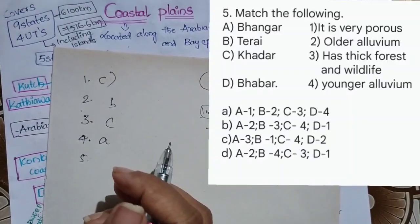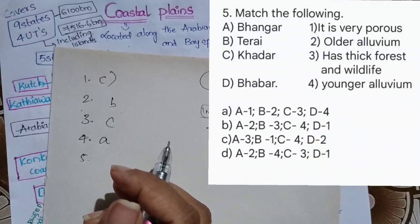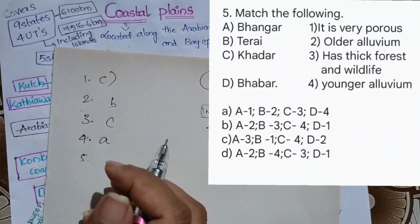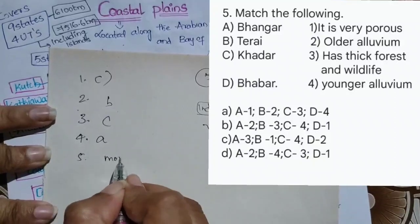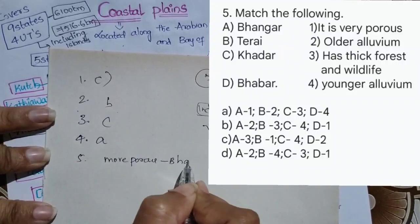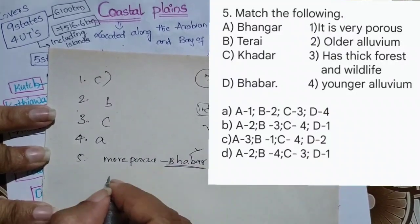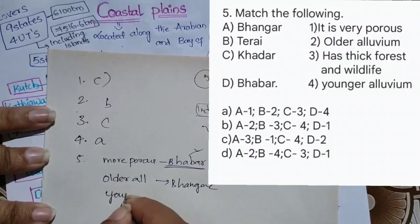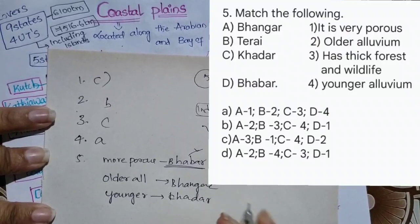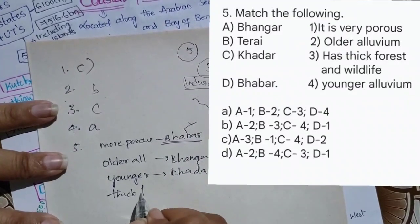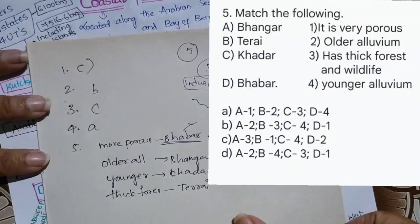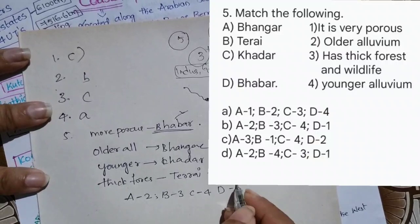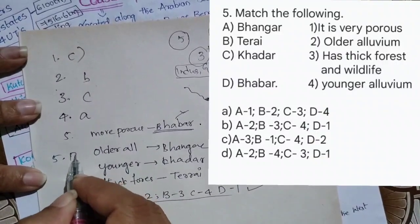Next question: match the following — Bangar, Terai, Khadar, Bhabar — with: very porous, old alluvium, has thick forest and wildlife, young alluvium. Bhabar is most porous due to pebble formation. Older alluvium is Bangar and younger is Khadar. Thick forest is found in Terai. So the matching answer: A is 2, B is 3, C is 4, D is 1. The answer for the fifth question is B.